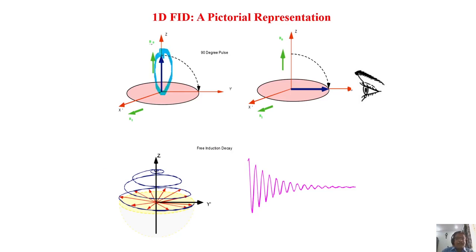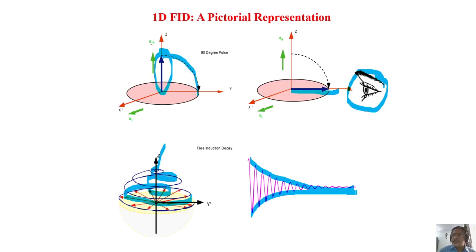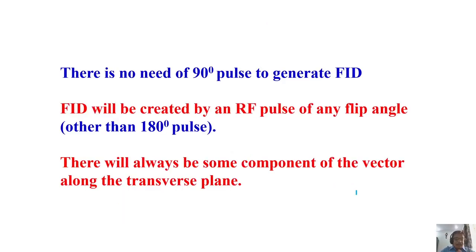This is what we always do in an NMR experiment. Thermal equilibrium magnetization is along the Z-axis; apply the 90 degree pulse; it grows along the Z-axis and decays in the XY plane. The decay follows an exponential oscillating damped function. This is the free induction decay we detect.